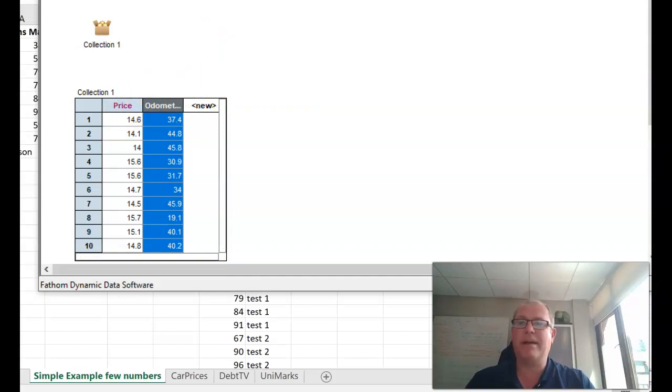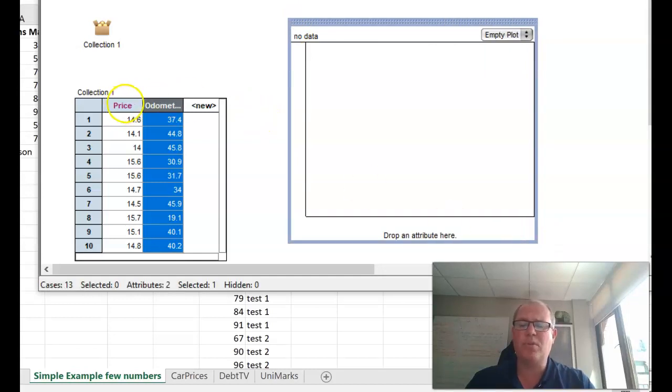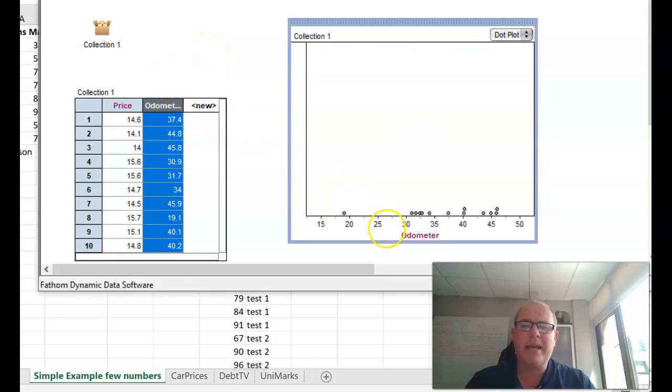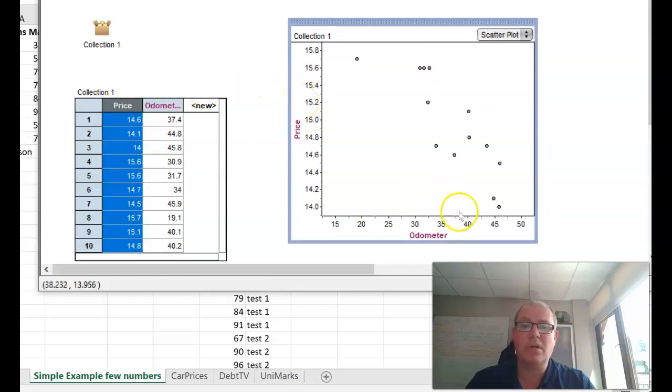Once you've got the price and the odometer, you're going to pull down a graph. Just grab a graph and pull it down. It's really important which one goes on the horizontal axis and which one goes on the vertical axis. Does it make more sense for the mileage of a car to predict the price?